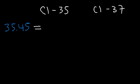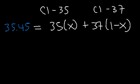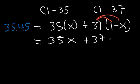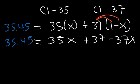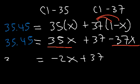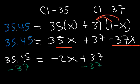Setting up the equation: 35x + 37(1 − x) = 35.45. Distributing the 37: 37 × 1 = 37, and 37 × (−x) = −37x. Combining like terms: 35x − 37x = −2x. So the equation becomes −2x + 37 = 35.45. Subtracting 37 from both sides: −2x = 35.45 − 37 = −1.55.